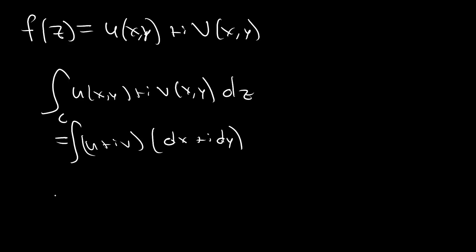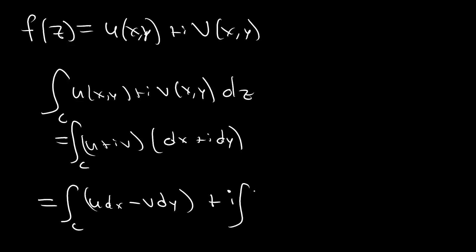Expanding this out even further, once we multiply out (u + iv)(dx + i·dy) and break it into real and imaginary components, we're going to get the integral over our simple closed curve of u·dx minus v·dy, plus our imaginary term — the integral over our simple closed curve of v·dx plus u·dy.